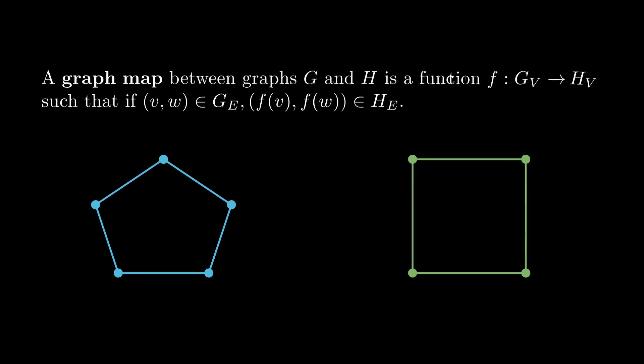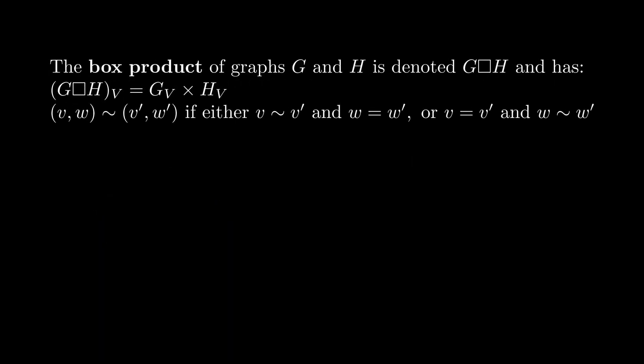The final thing we need to define discrete cubical homology is the notion of a product between graphs. And for us, that's the box product. So given two graphs, G and H, their box product, which is denoted G box H, has a vertex set, just the Cartesian product of the vertex sets of G and H.